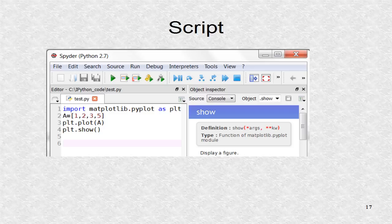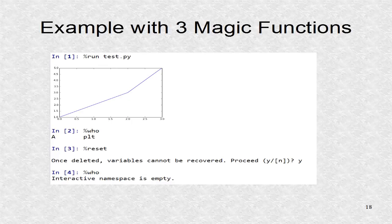Using Spyder, available in the Anaconda folder, I will write a four-line script. Spyder is a Python integrated development environment. It has a useful documentation window and offers two kinds of shell: original Python and IPython. In this example I used the magic percent run to execute the file shown — it outputs a simple figure. We can use percent who to see what variables are in memory, then percent reset to clear all variables, so percent who will indicate there is nothing in memory.